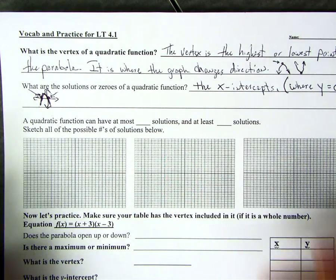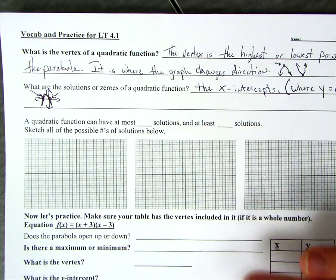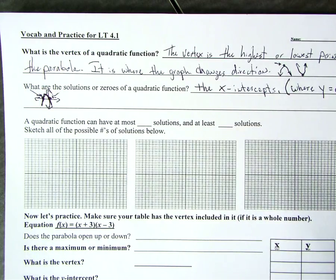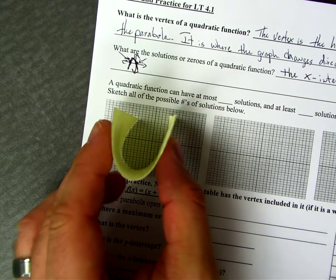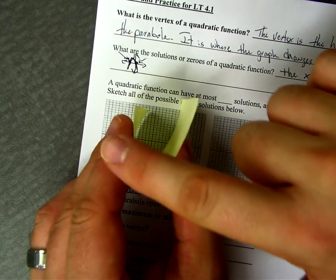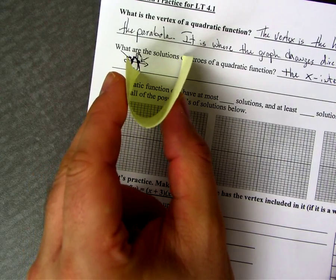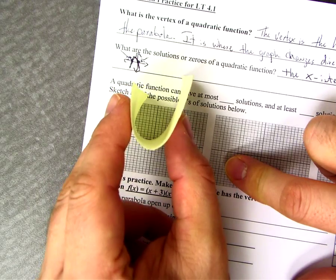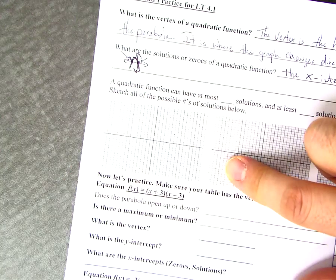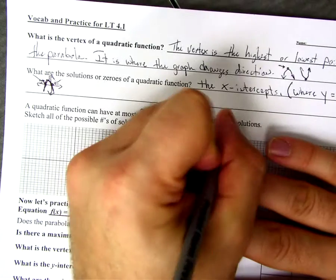All right, so now the question is, a quadratic function can have at most how many solutions and at least how many solutions? All right, so if I've got a quadratic function that looks kind of like this and I were to put it on the graph, all right, right now it's going to have two solutions, one here and one here. If I were to slide it up, we could slide it all the way up and would it ever cross the x-axis? The answer would be no, it would never cross this x-axis right here. All right, but we can also slide it down, and if it just touches the x-axis once, it's going to have one solution.